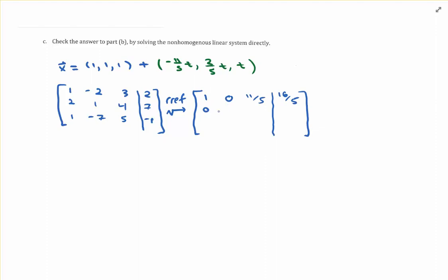Second row: 0, 1, negative 2 fifths. These would be the same three entries in the second row from the homogeneous RREF. But on the right-hand side, we don't get 0 either, we get 3 fifths. Bottom row is all 0s.